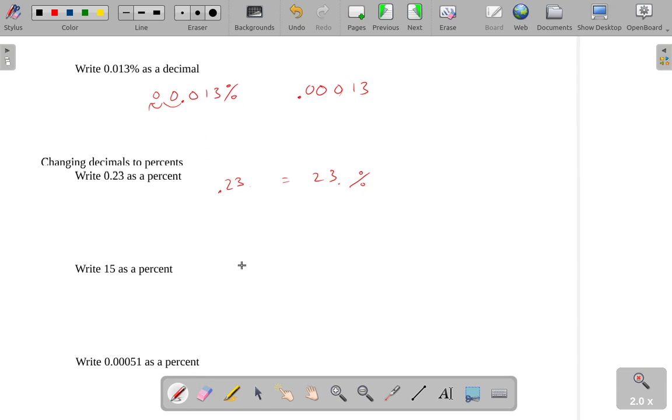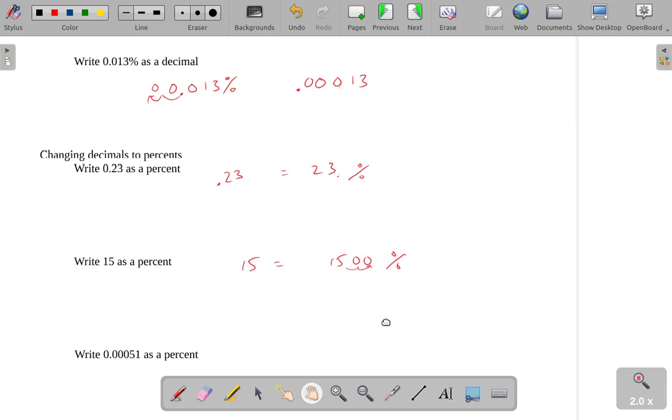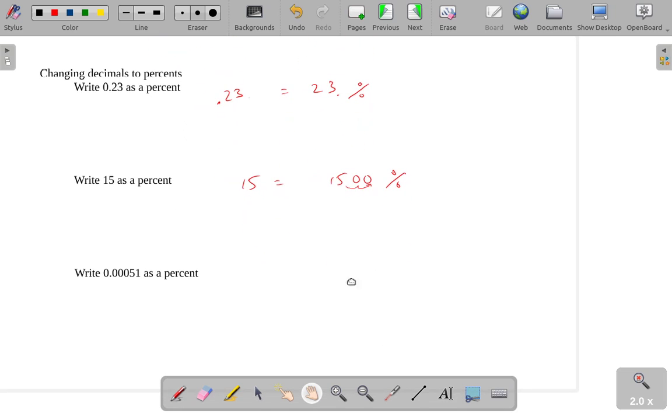If I have 15, and I want to write that as a percent, I want to move my decimal place two places to the right. So 15, written as a percent, is 1,500%.